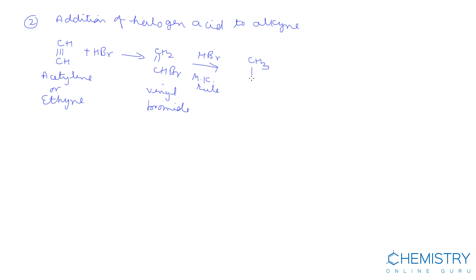When addition takes place according to Markovnikov's rule, we get this product, whose name is ethylidene dibromide.